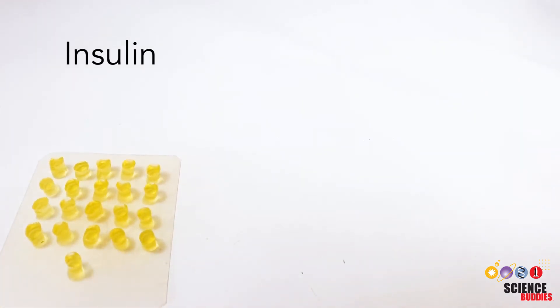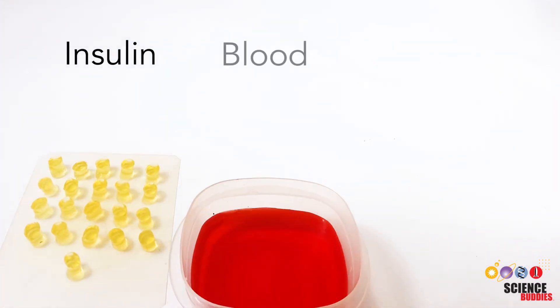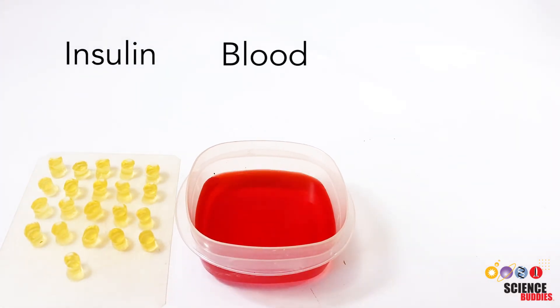Remember, the jello shapes model insulin. The red colored water models the blood in the bloodstream, which insulin enters rapidly when injected. And the protease solution models the gastric environment in the stomach that insulin in a pill form would encounter before entering the bloodstream. This means it is time for the actual experiment.